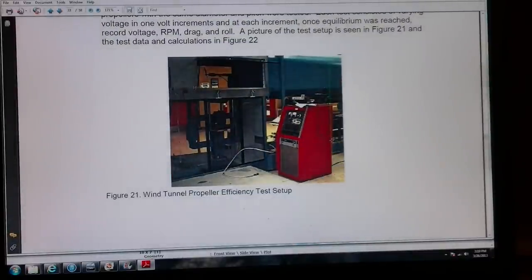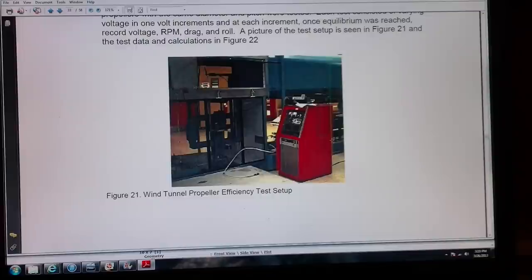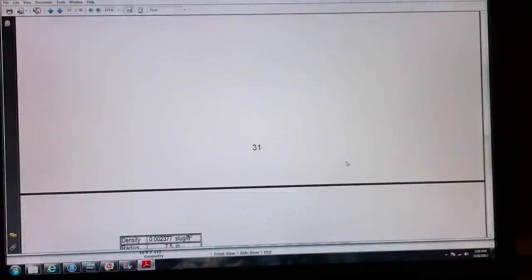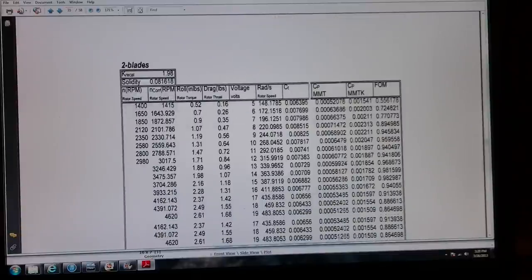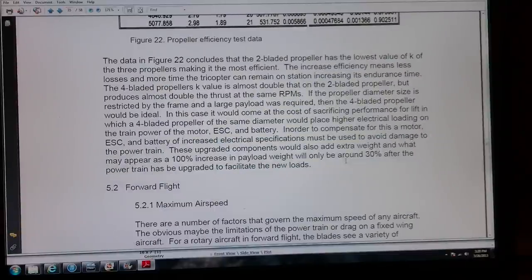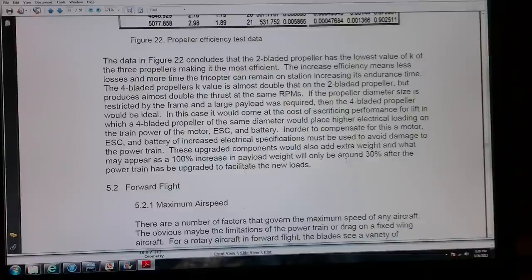So I had a wind tunnel setup where I had the same pitch and diameter varying the different amount of blades, and I calculated that value of K. I determined that value of K is reflected upon the amount of efficiencies or drags that might have there. I concluded that the two-bladed propeller had the lowest value of K, followed by the three-bladed propeller.